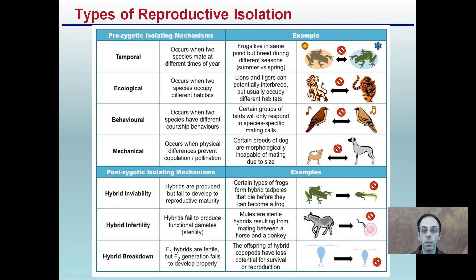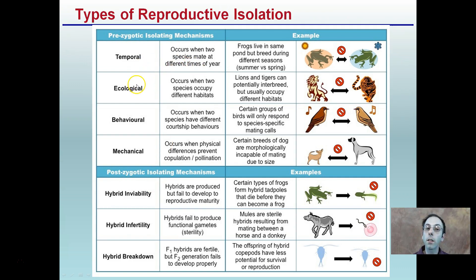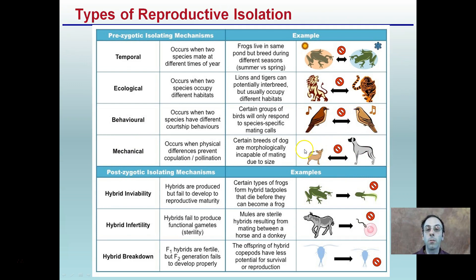This gives a nice summary table of both pre- and postzygotic isolating mechanisms. Temporal is when they mate at different times of the year; ecological is when two species occupy different habitats; behavioral is when they have different courtship behaviors; and mechanical occurs when physical differences prevent pollination or mating — for example, different sized dogs mechanically cannot produce offspring because they can't physically mate.